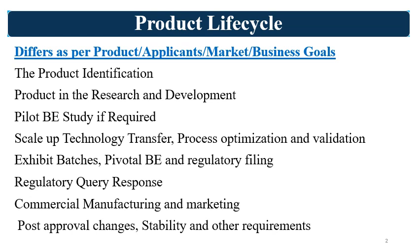The product life cycle and development pathway differs as per the product requirements, product criticality, risk involved, different applicants like organizations, the product market, and specific business goals. First is product identification — idea generation or availability of a new chemical entity. Based on that, product identification starts. After product identification, the product comes into the research and development phase. Once the NCE is there for an NDA product, or once the product is identified for filing or marketing for the generic product, it enters the R&D phase.